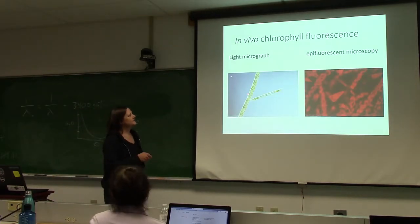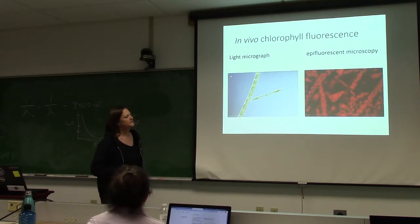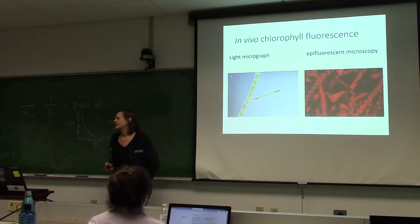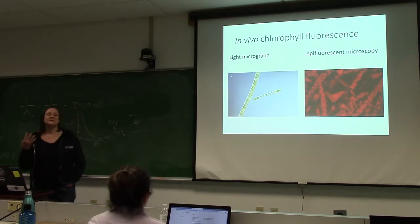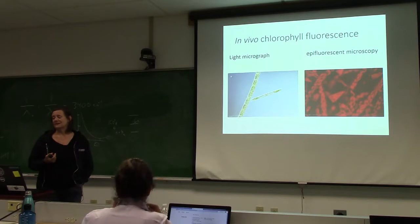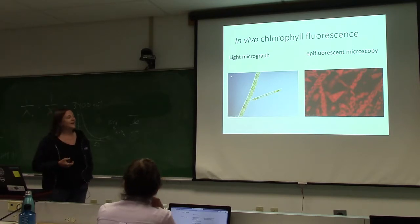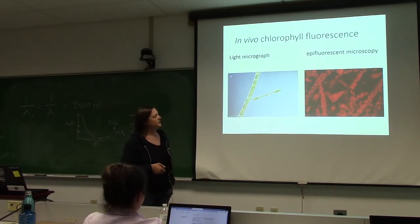Here are some light micrographs — that's a diatom. You can see the different cells and the chloroplast. This is what a mixture of diatoms looks like under an epifluorescence microscope, where what you see is the fluorescence by the chlorophyll that is in the chloroplast. It's really stunning to see the individual structures.